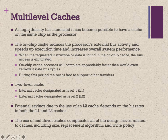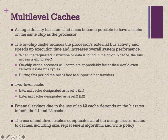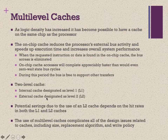That is why we need multiple levels of cache. As logic density increases, it becomes possible to have a cache on the same chip as the processor. This on-chip cache reduces processor external bus activity and speeds up execution time, increasing overall system performance. When the requested instruction or data is found in the on-chip cache, the bus access is eliminated. Some processors use two levels of cache: an internal Level 1 (L1) cache and an external Level 2 (L2) cache — external to the control unit but still on the chip.